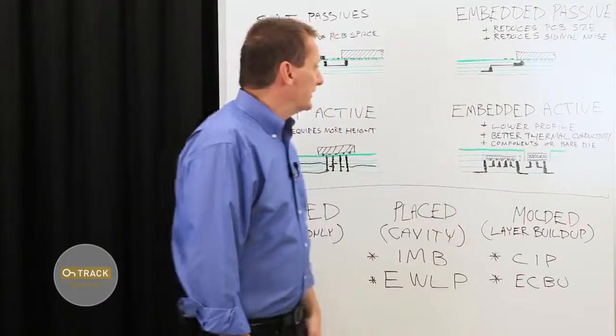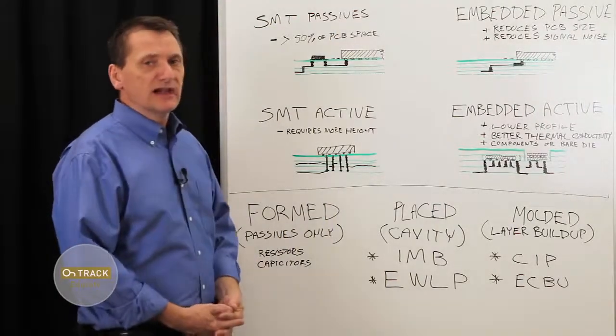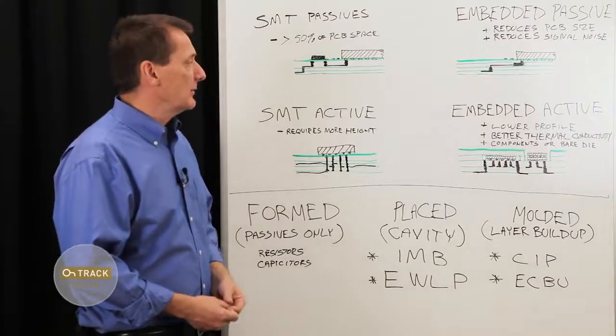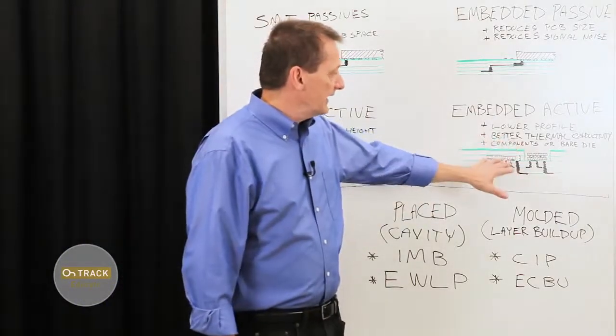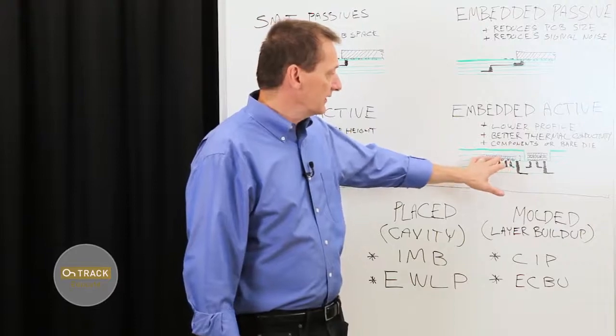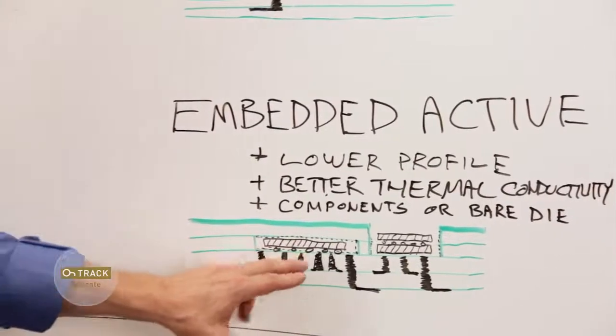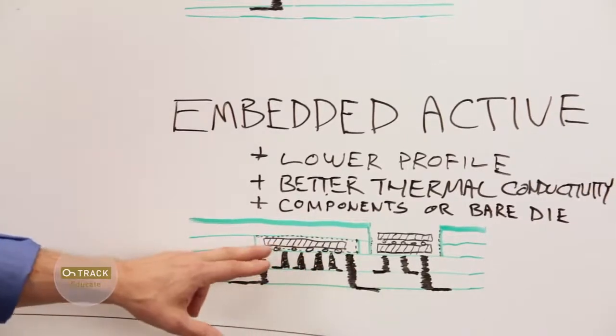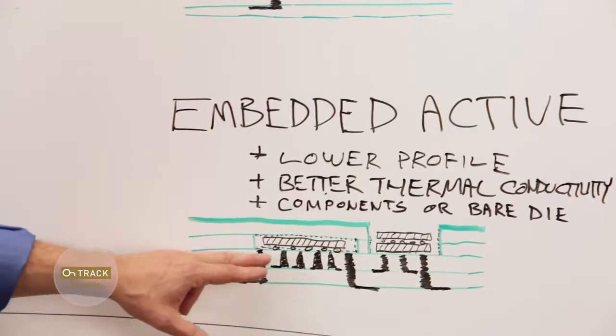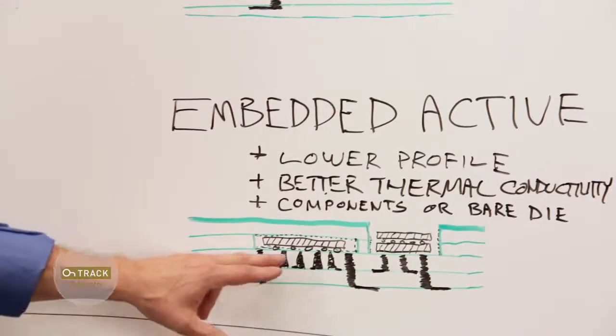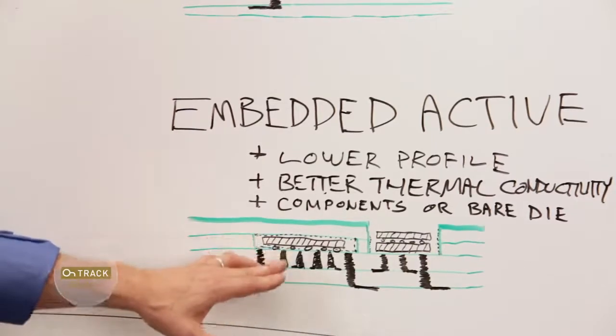Another benefit is that we can mount components as bare dies. So we don't have to have a full package of a component. We can get it right from the silicon wafer and then wire bond it into the board. So this is an illustration here showing a couple techniques where we've embedded into the cavity of the traditional board, but we're using a more advanced microvia or blind and buried vias to achieve the interconnect.